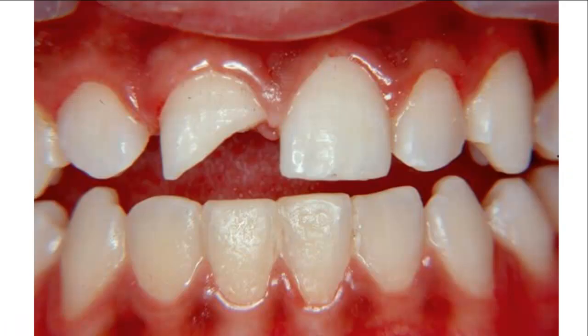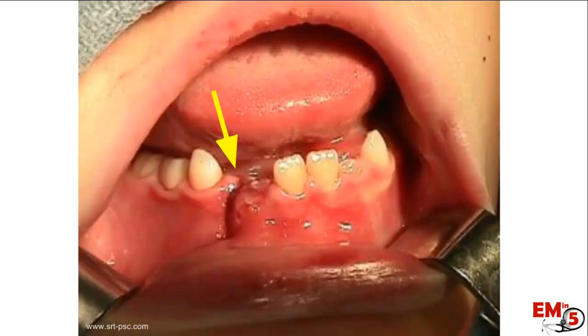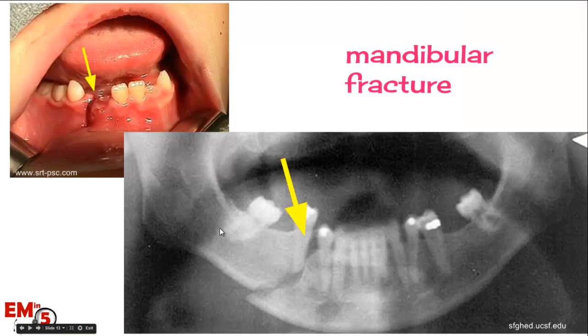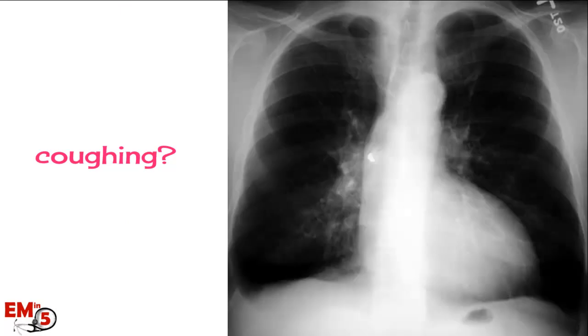Anytime you have a patient with a dental fracture or facial trauma, there are a couple of things to think about. If you see step-off or deformity, that's concerning for a mandibular fracture — make sure you get a panorax. And if the patient's coughing a lot, you need to get a chest x-ray because they might have aspirated a piece of that tooth. Here's an example of a piece of tooth in the right bronchus.